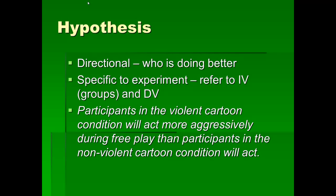That's the main thing about IVs, DVs, and the basics of experiments. Now, a couple of minor things: first, about hypotheses. A hypothesis needs to be directional — that is, which condition is doing better, which is doing worse — and specific to the experiment, meaning you must refer to the independent variable and dependent variable. A good hypothesis for our example would be: participants in the violent cartoon condition will act more aggressively during free play time than participants in the nonviolent cartoon condition.